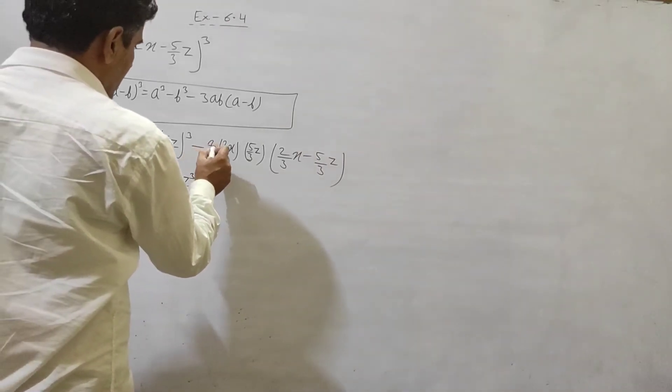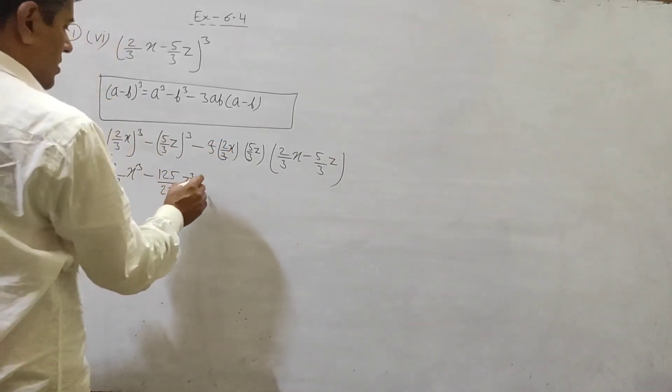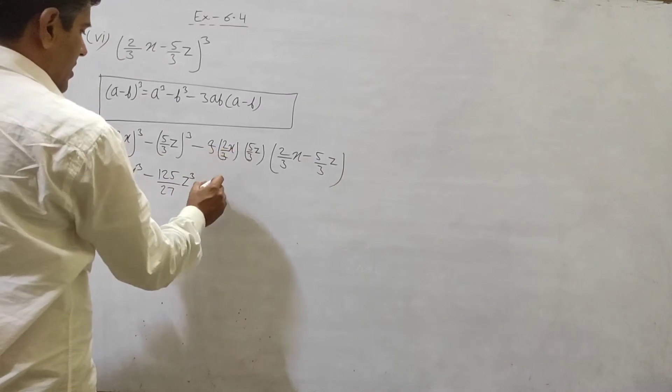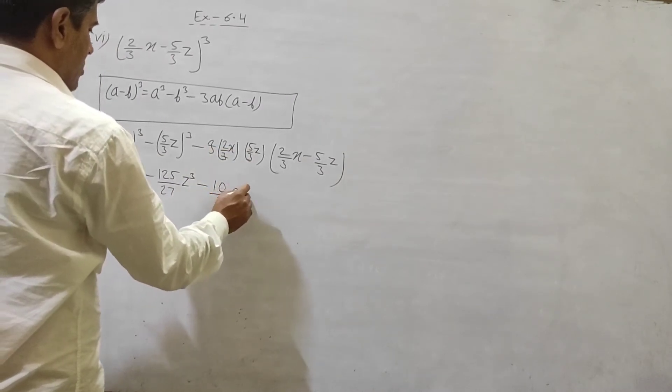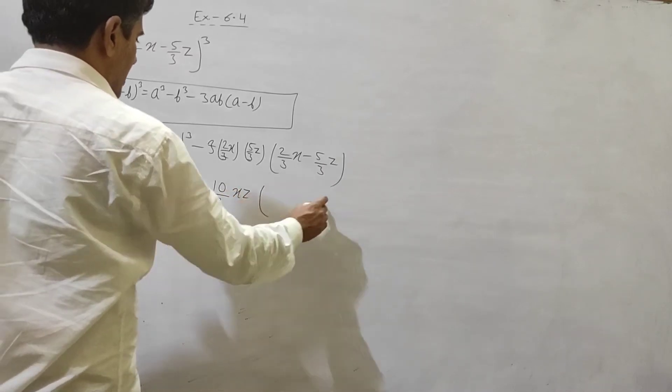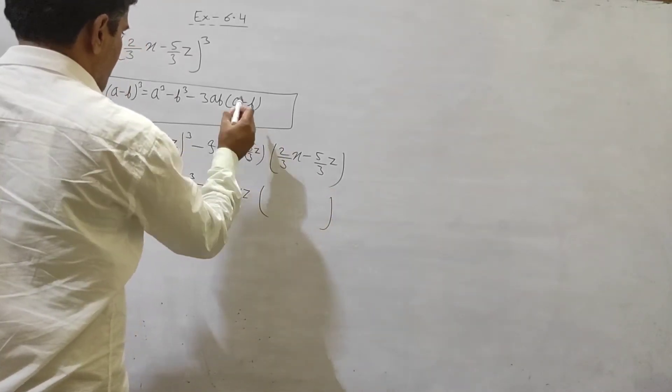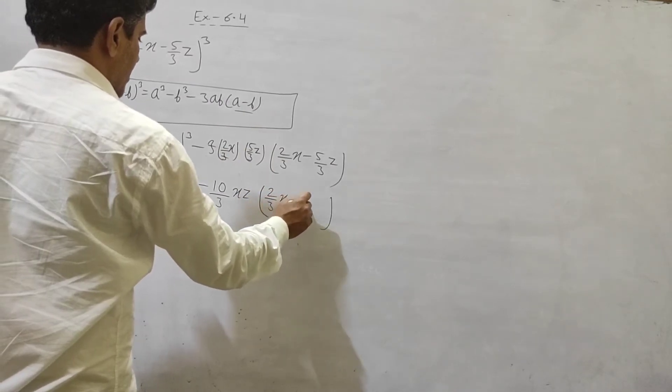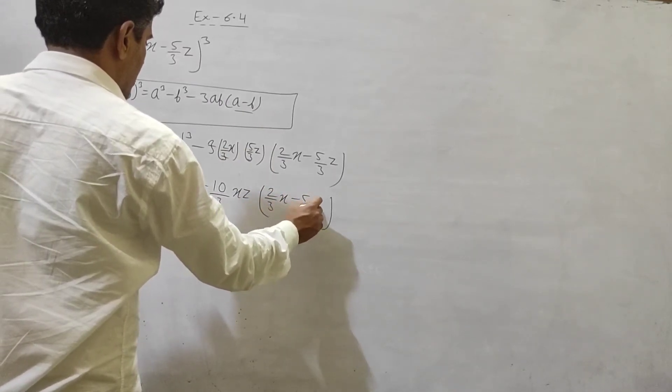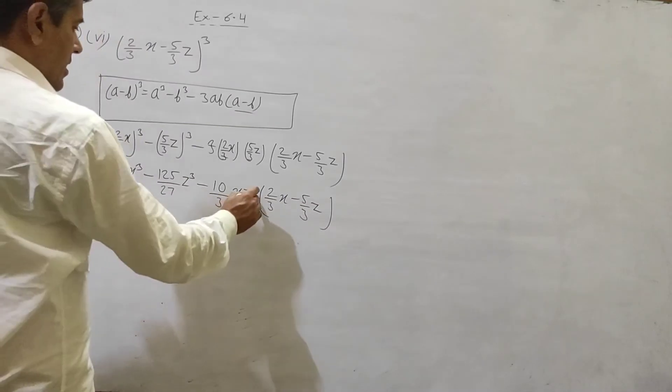Here we go, 3 and 3 cancel out. Remain 2 multiply 5, 10 by 3 xz. Isko multiply karna hai with a minus b: 2 by 3x minus 5 by 3z.